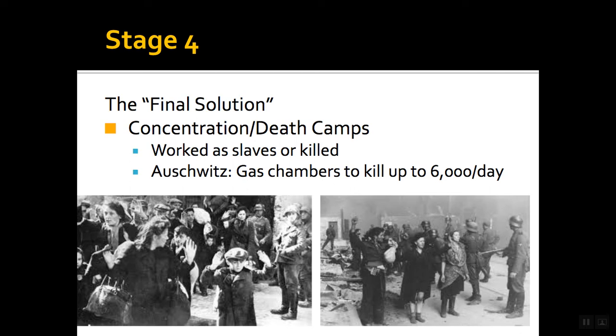So they set up concentration camps and death camps — two different types. In concentration camps, you worked as slaves doing work for the Third Reich, and you were fed next to nothing in absolutely miserable conditions. Even in the concentration camps, the weak were separated from the strong, and the weak were sent off to death camps or killed there. Many people also didn't survive the train rides — they were stuffed in so tightly that people died of suffocation, or froze during winter. There are all sorts of accounts of people not even making it to the camps.